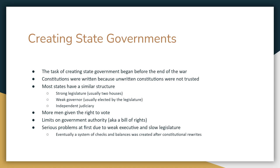The early frameworks for governing really start with the state government. The state governments start to form before the Revolutionary War ends. Constitutions begin to be written down, and the people really dislike unwritten constitutions — they can't be trusted. The Constitution of Great Britain is largely unwritten, and people were really worried about it. To draft the Constitution, the states are going to call conventions, and most of these leading citizens are going to come and talk about what they want the government to look like.